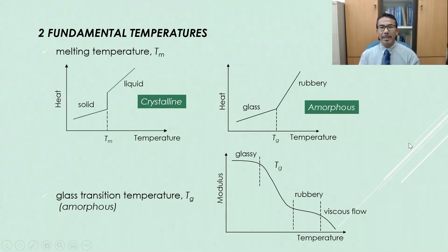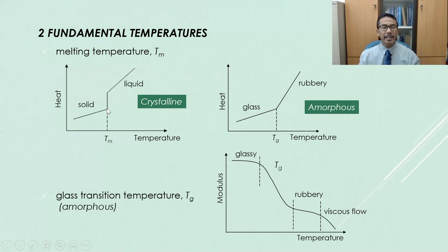There are two fundamental temperatures associated with polymeric materials: melting temperature and glass transition temperature. Looking at the typical graph relating heat and temperature for a crystalline solid — as heat is increased, the temperature rises until a certain point where further heat input does not increase temperature. Then the temperature starts to increase again. The point at which the temperature is constant is known as the melting temperature. Below the melting temperature the material is in a solid phase; beyond it, the material becomes liquid.